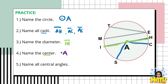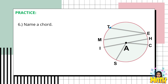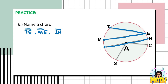Next, let us name all the central angles — these are angles formed by two radii with the vertex at the center. Here we can have angle HAC, angle CAS, angle IAS, and even angle HAS. For as long as the vertex is the center of the circle, it is a central angle. Next, let's name a chord: segment TE, segment ME, and segment IH are all chords. However, we specify that segment IH is particularly known as the diameter.